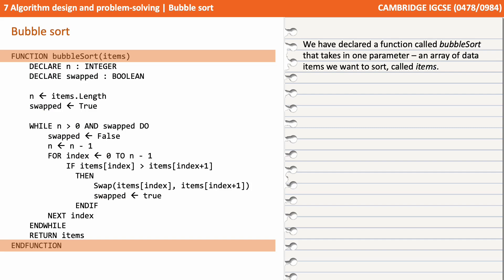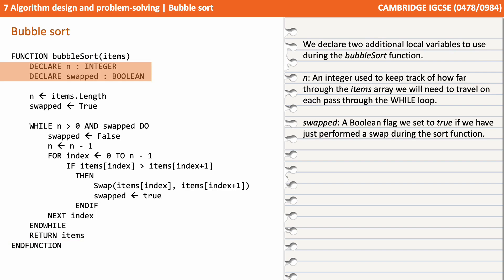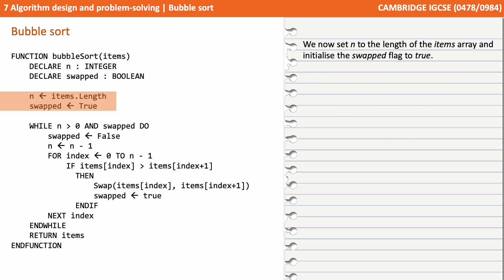Let's look at the pseudo code for this bubble sort and break it down. We've declared a function called bubble sort, which takes in one parameter — an array of data items we want to sort, called items. We declare two additional local variables: n, an integer used to keep track of how far through the items array we'll need to travel on each pass through our while loop; and swapped, a boolean we will set to true if we've just performed a swap during one of our sorting passes.